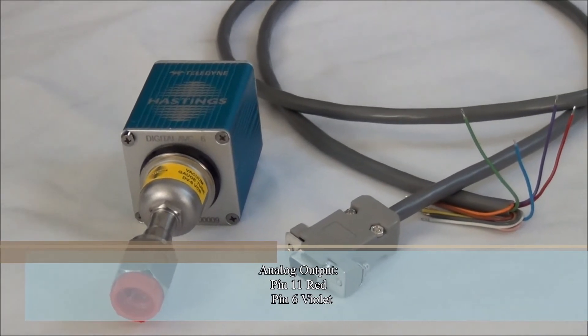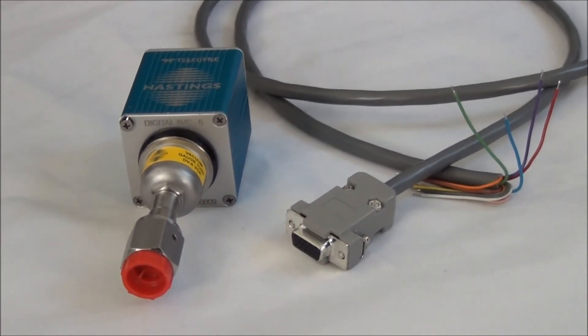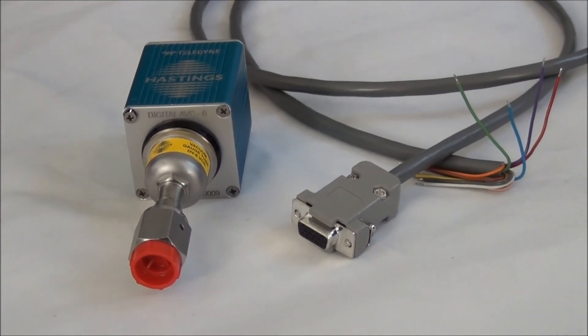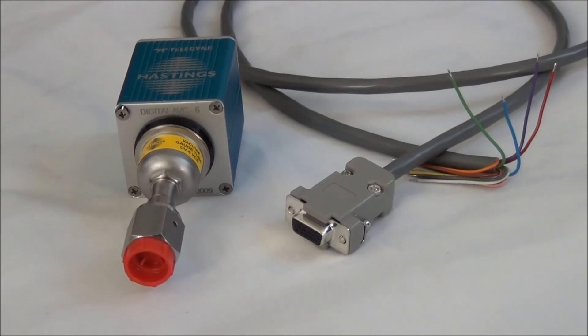I'll point out again that the DAVC can be configured to give 4 to 20 milliamp output. Now 4 to 20 milliamp can be very useful in electrically noisy environments or when the DAVC is mounted far from a PLC.